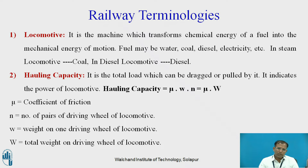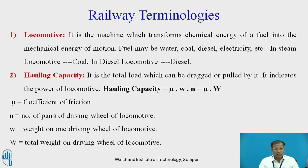Hauling capacity is given by mu into W into N, where mu indicates the coefficient of friction, W is the weight coming on the driving wheels, and N is the number of pairs of driving wheels.